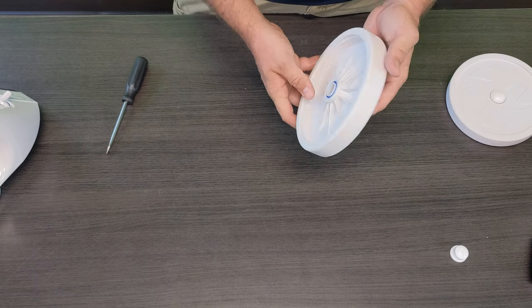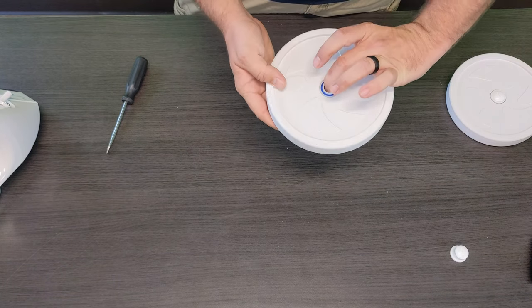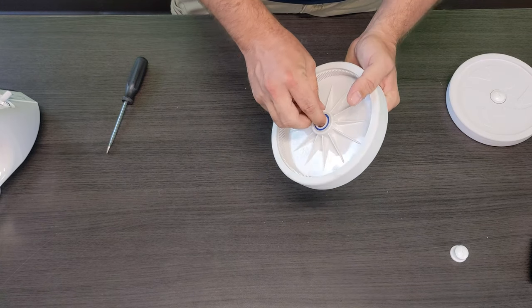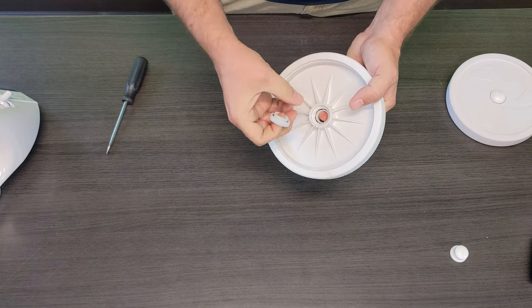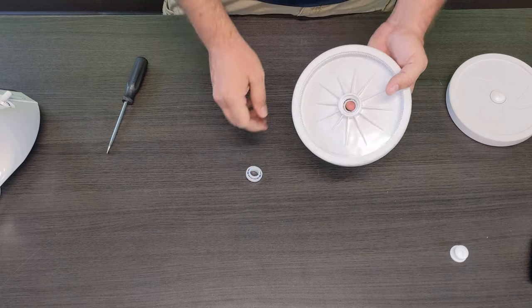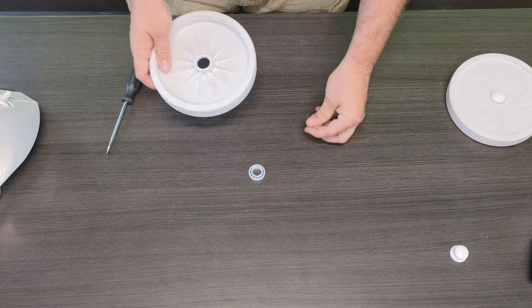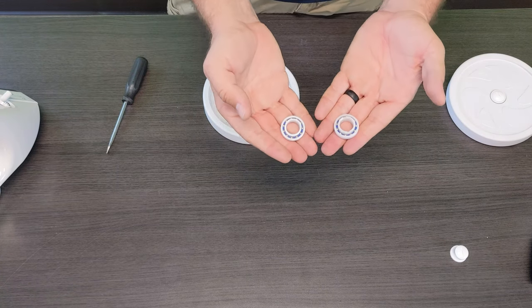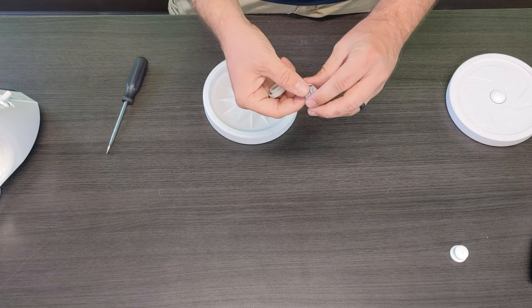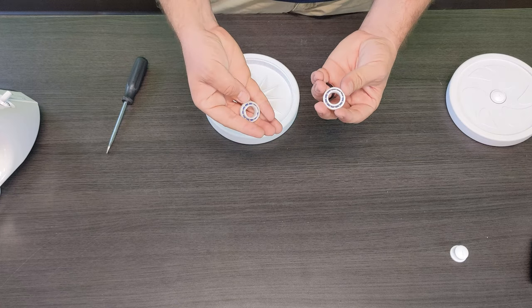So typically what I like to do is I'll kind of hold one bearing with my other finger and then kind of work the other one out. They are just pressure fit inside of the plastic hub itself here. So once you get one out the other one kind of slides right out. And again they are the same notorious bearings that they use for a lot of their cleaners.